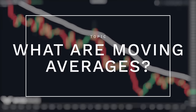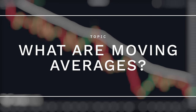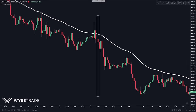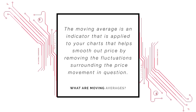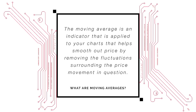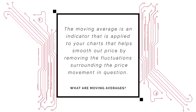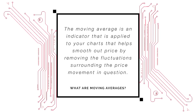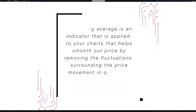First, what are moving averages? By definition, the moving average is an indicator that is applied to your charts that helps smooth out price by removing the swings and fluctuations surrounding the price movement in question. Don't think too hard about this because the key way we show you how to use moving averages is more important.